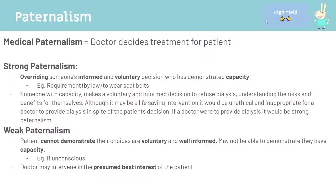Third concept: paternalism. Medical paternalism is when a doctor decides treatment for a patient, either against the patient's desires or when the patient can't decide. Strong paternalism is overriding someone's informed and voluntary decision who has demonstrated capacity — for example, seatbelt laws require compliance even if someone fully understands the risks and voluntarily chooses otherwise. A medical example: if a patient with capacity voluntarily refuses dialysis, it would be unethical and strong paternalism for a doctor to provide it anyway.